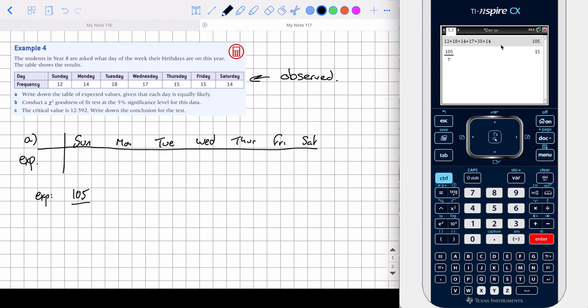1 by 7, that gives us 15. So we would expect that there should be 15 birthdays on Sunday, 15 on Monday, etc. So we're just finding, we're just averaging it out, making it nice and fair.